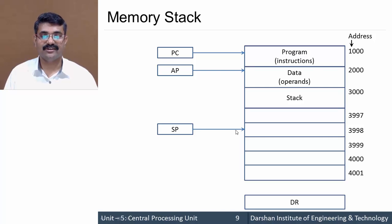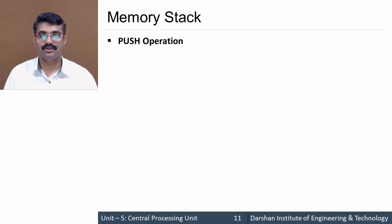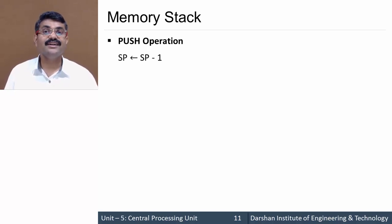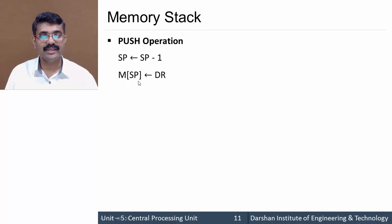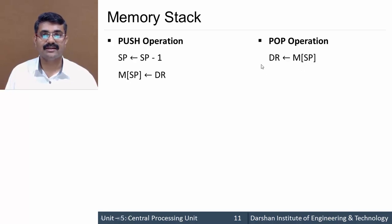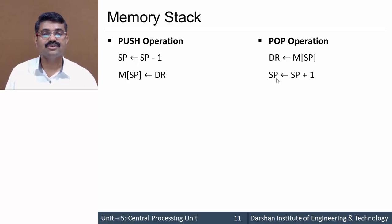There is a minor difference in memory stack organization compared to register stack. In the push operation, the stack pointer is decremented by one (rather than incremented), and then the content of DR is stored at M[SP]. For the pop operation, the content of the stack pointed to by SP is transferred to DR first, and then the stack pointer is incremented — the reverse of push.